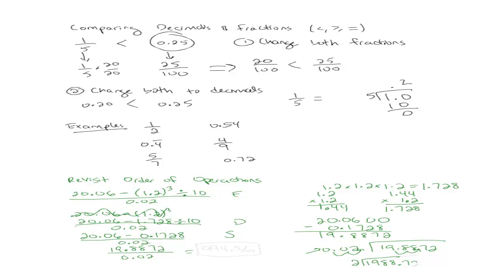So the new problem is 1988.72 divided by 2. Go ahead and do that one and tell me what you get. What do you have? You sure this will go 9 times? Try 9 times. 994.36, right? That's the final answer.